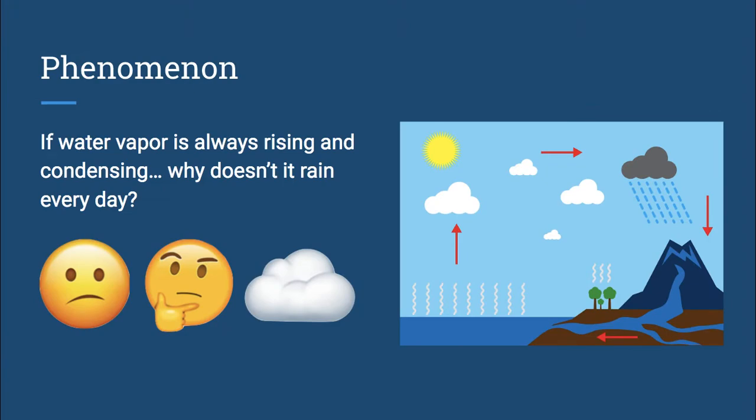Let's start with a phenomenon. Maybe you've wondered, if water vapor is always rising and condensing, why doesn't it rain every day? And the answer has to do with the fact that not all air is the same.